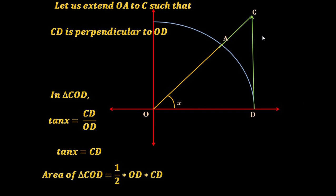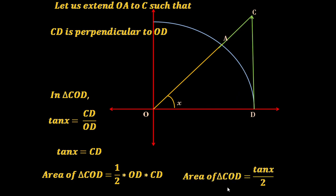Area of triangle COD equals half into base into height, where OD (the base) is 1 and CD is tan(X). Thus area of triangle COD equals tan(X) by 2.